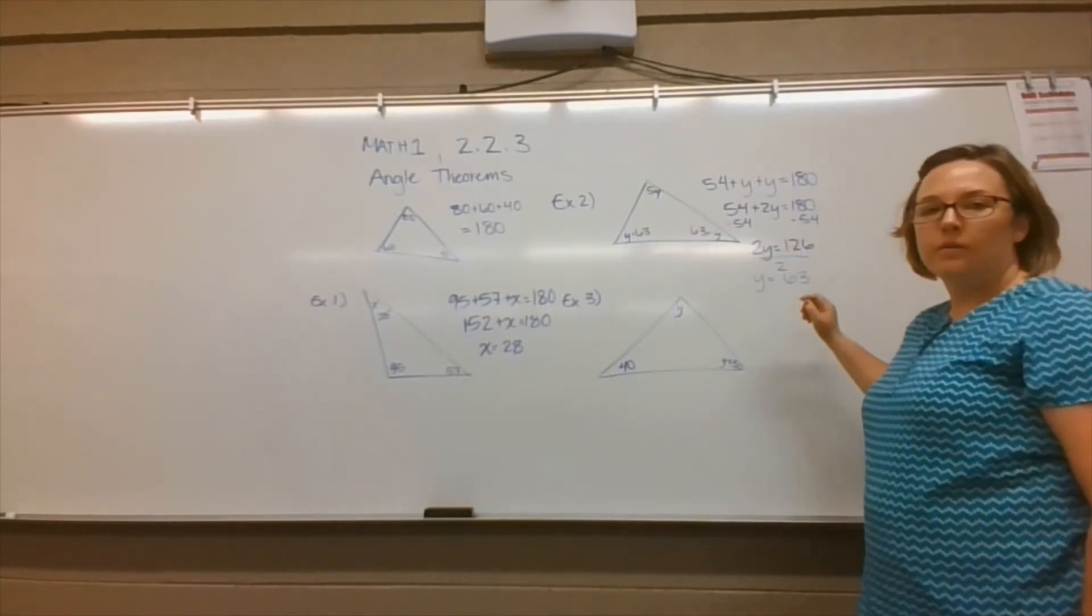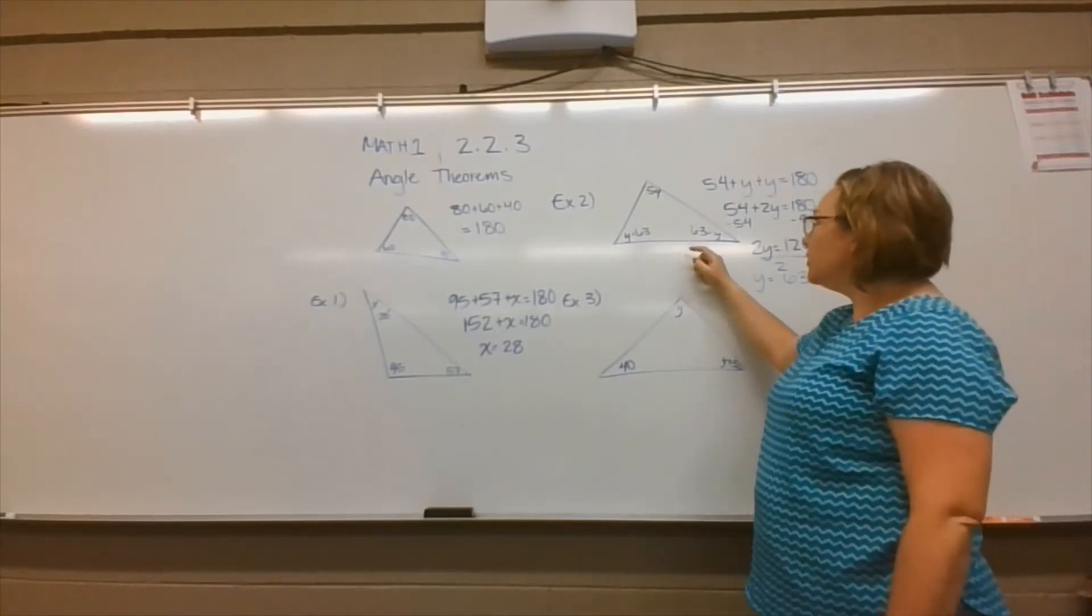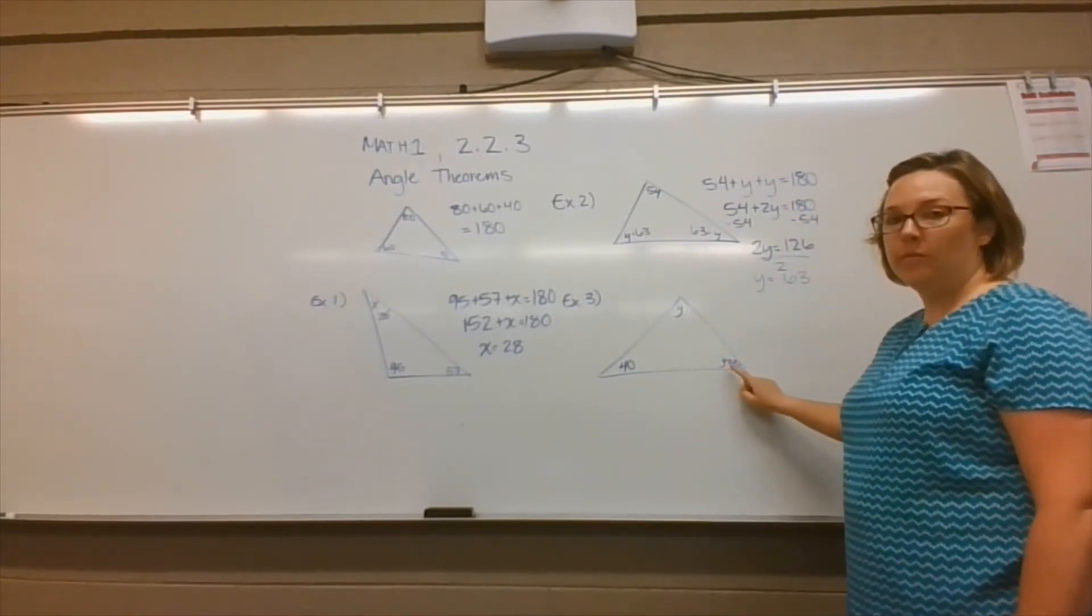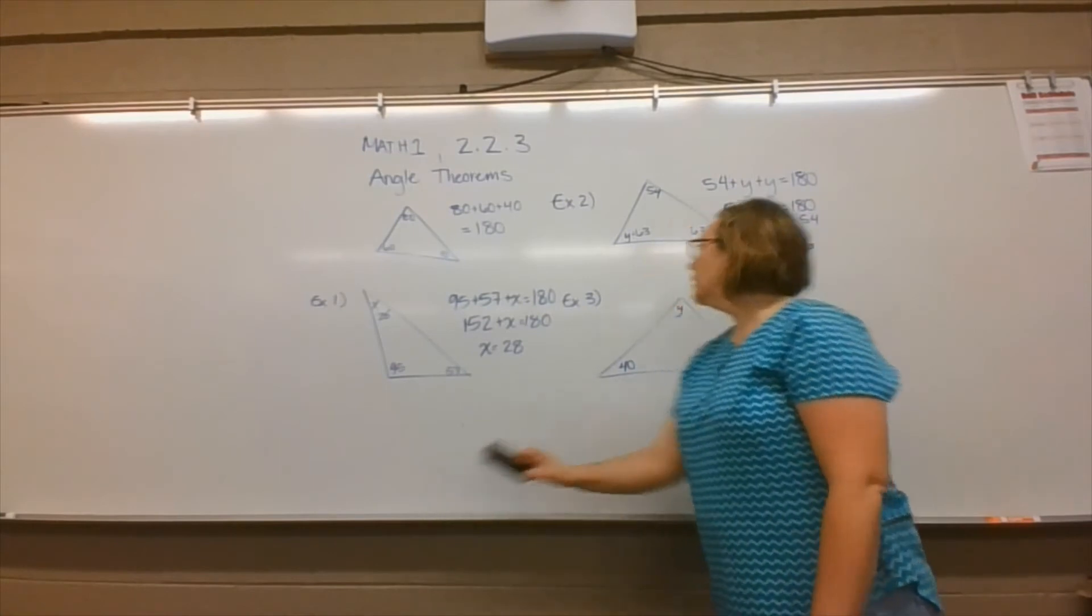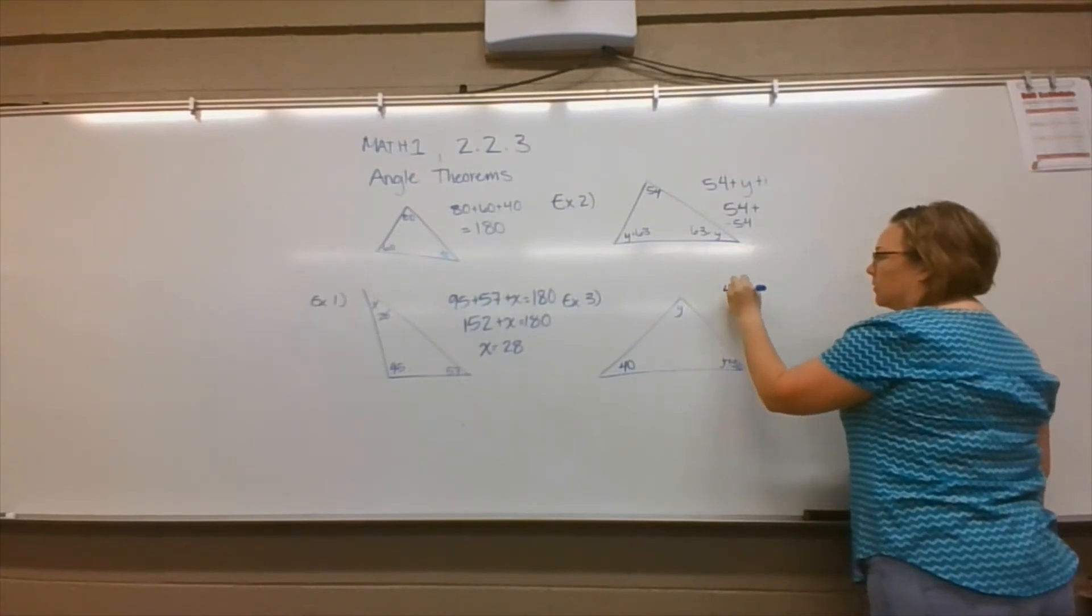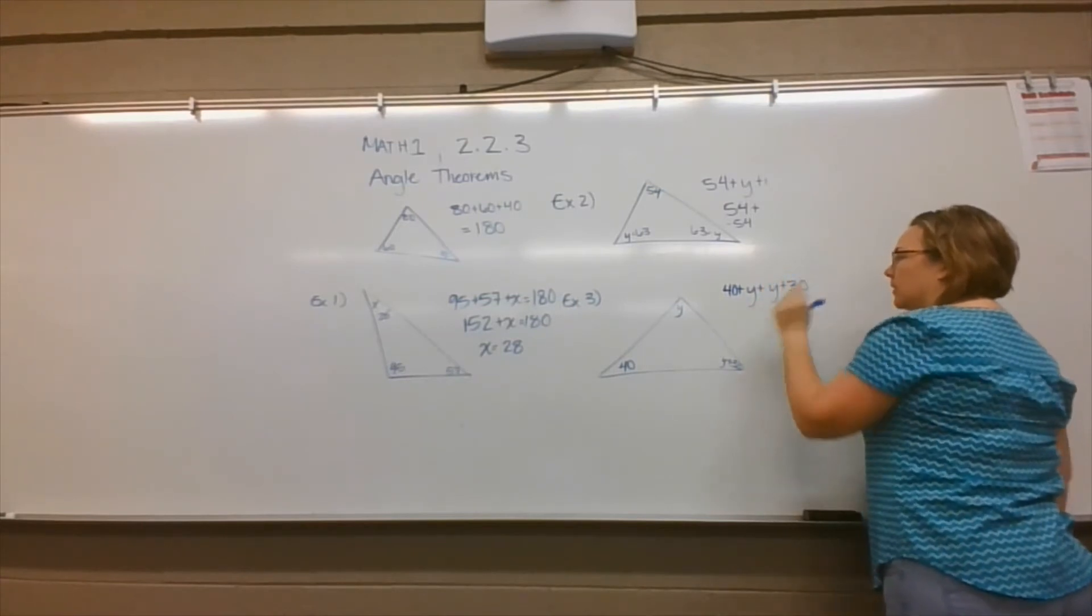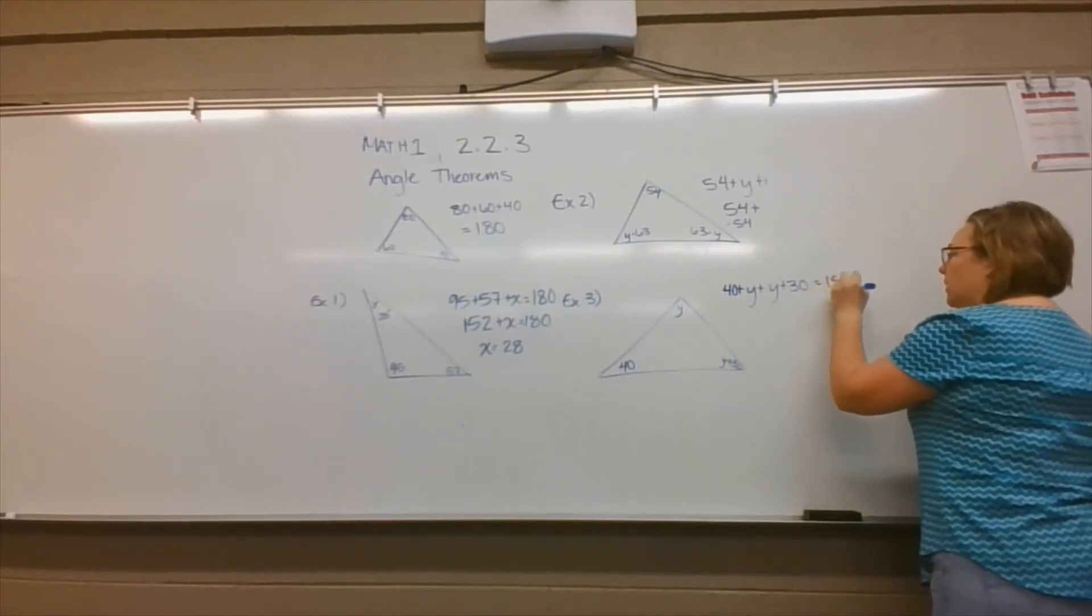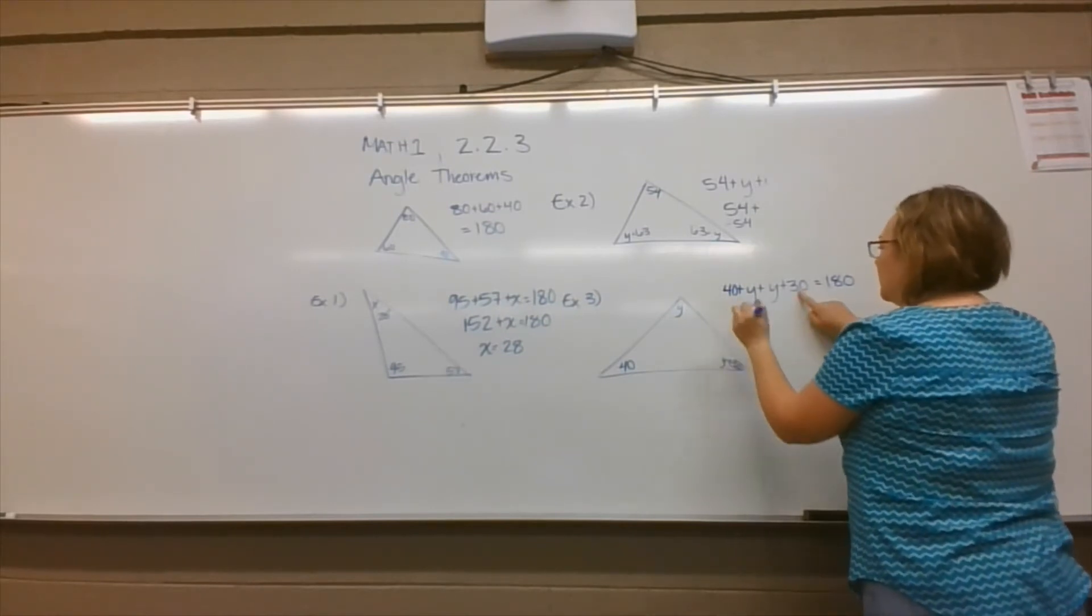A third example is very similar to these prior two. You have a variable, but in this case we also have a variable plus a constant. We're going to add all of these together. I'm going to erase this and give myself a little more room. So we're going to say 40 plus y plus y plus 30 equals 180. Now we need to add all of our like terms together. So 40 plus 30 is 70, and y plus y is 2y.